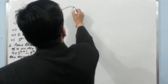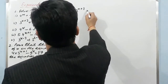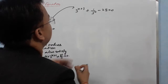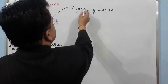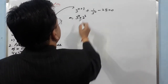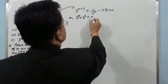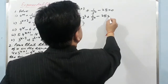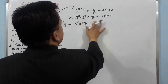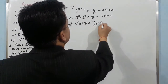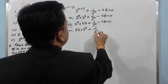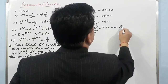Question 2: 3^(x+3) + 1/3^x − 28 = 0. Here we can't substitute directly because we don't have 3^x everywhere. We need to bring 3^x out. By the law of indices, we write 3^(x+3) = 3^x × 3³ = 27 × 3^x. So the equation becomes: 27 × 3^x + 1/3^x − 28 = 0.